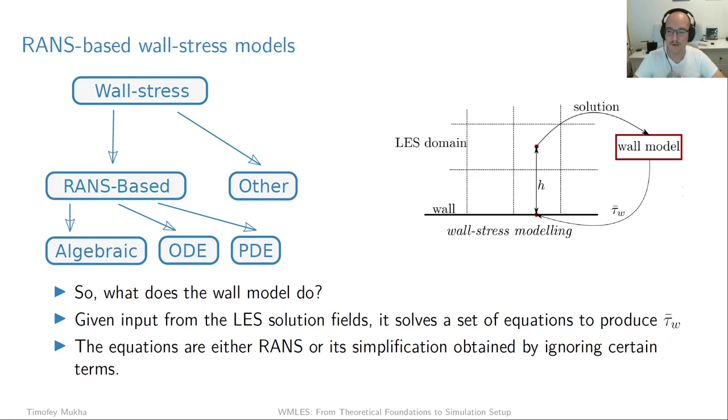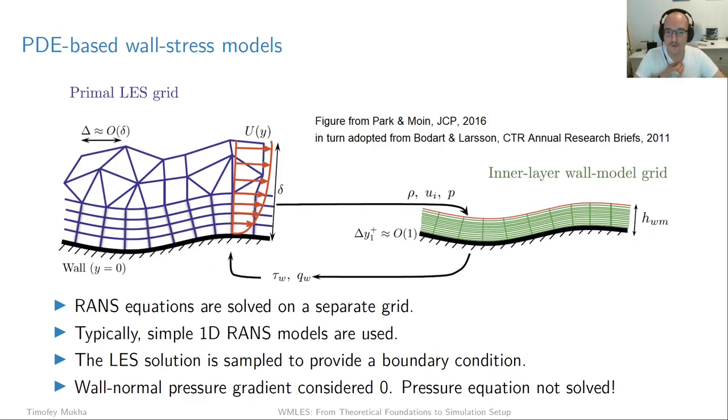So as the name implies RANS based wall models are based on RANS equations. We're going to start with the most complicated ones which are the PDE models. This figure which I took from Park and Moin, a paper in Journal of Computational Physics, really illustrates very well how a PDE-based wall model works. They in turn adapted it from Bodart and Larsson from this CTR annual research brief from 2011. What we see here on the left is the LES domain as it should in wall stress modeling. It stretches all the way down to the wall. An LES grid is somehow adapted to the outer length scale of the turbulent boundary layer delta, which is also depicted very nicely here. Now the way a PDE-based RANS model works is that you solve the full RANS equations on a separate grid. So you actually construct a separate grid for the same geometry spanning between the wall and this distance h for each wall face.